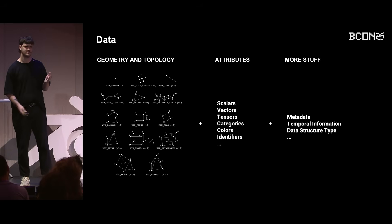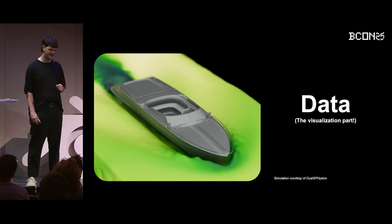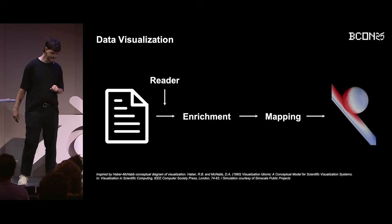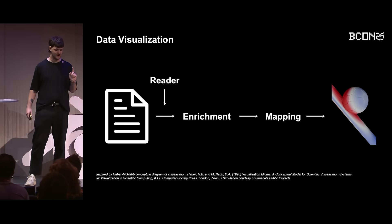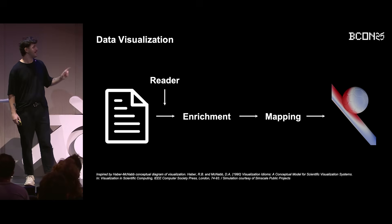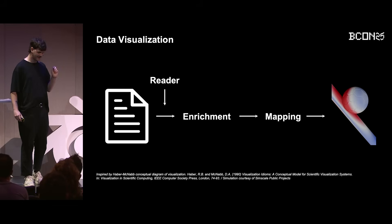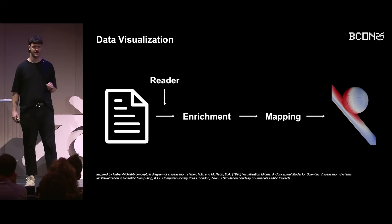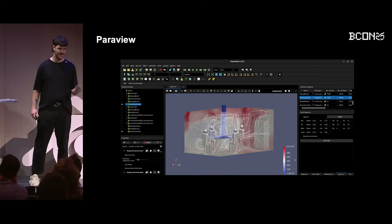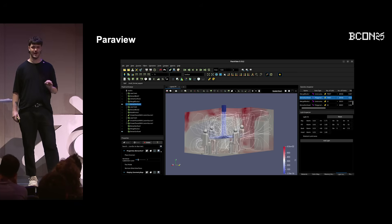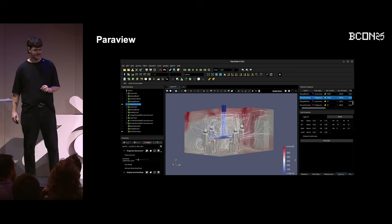So the question is: how do we make any sense of it? We visualize it — scientific communication and scientific visualization. We turn that mountain of numbers into an image that tells a story. The classic scientific visualization pipeline, famously outlined by Haber and McNabb, looks like this. You have a reader that parses the data file, an enrichment step where you filter or derive new data, and finally a mapping stage where you map data values to visual properties like color, geometry, or opacity.